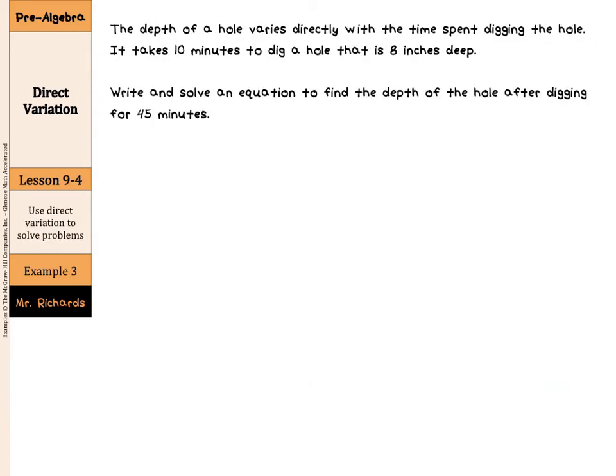In our third example, we are using direct variation to solve problems. The depth of a hole varies directly with the time spent digging the hole. It takes 10 minutes to dig a hole that is 8 inches deep. Write and solve an equation to find the depth of the hole after digging for 45 minutes. We are going to start this question by using our direct variation equation, which is Y equals MX.